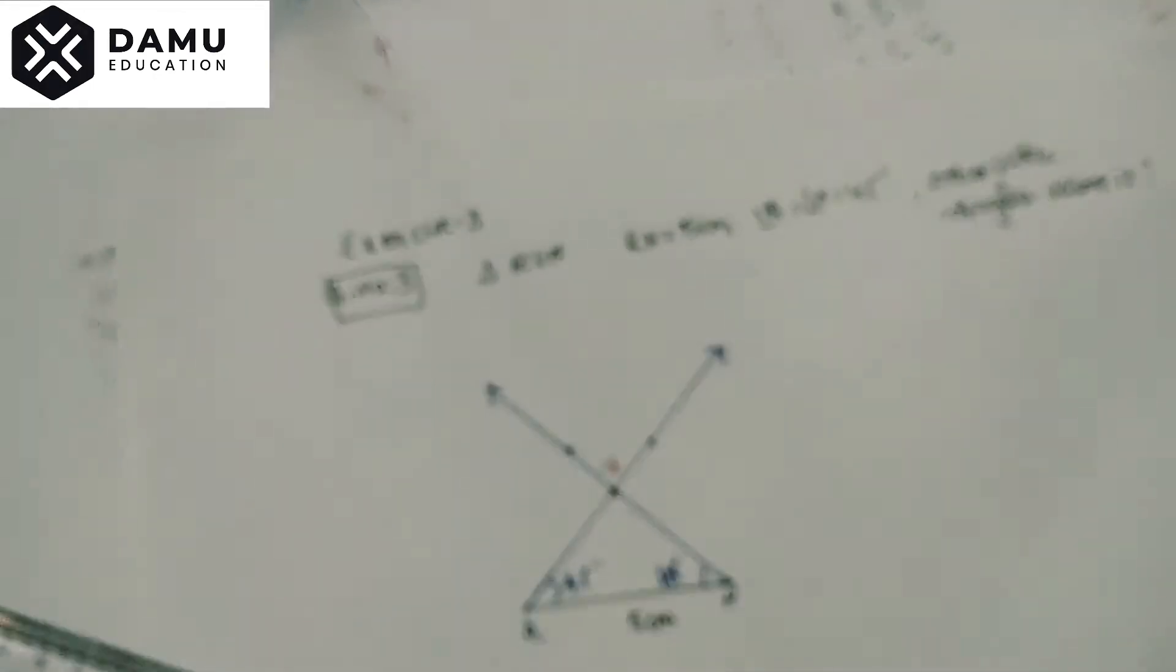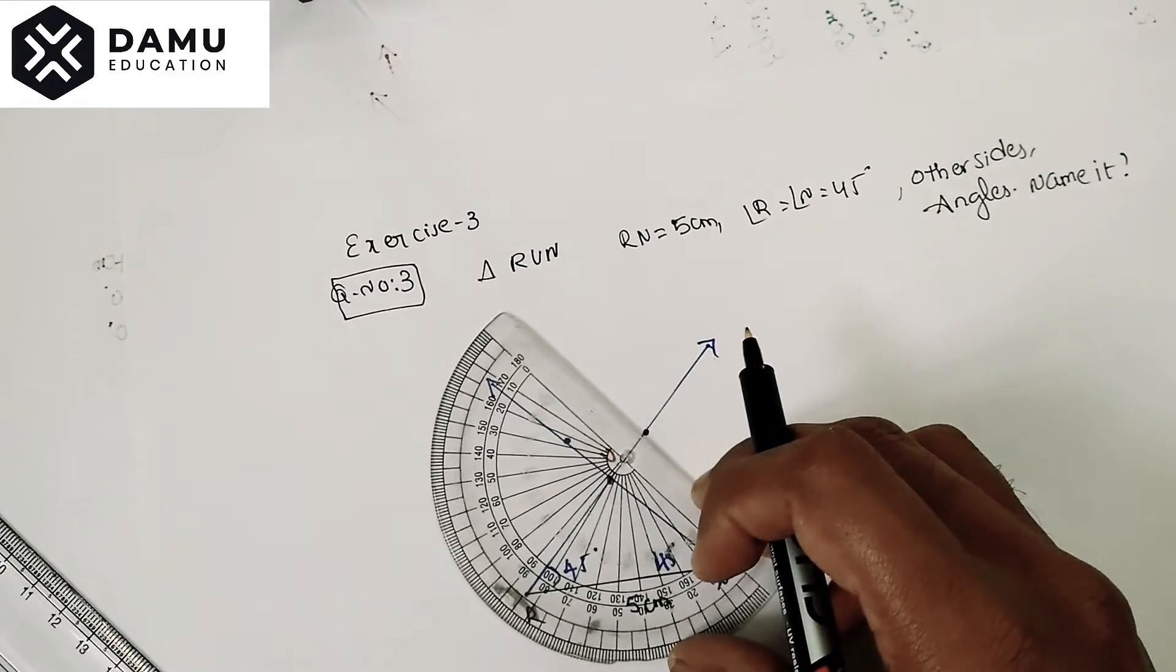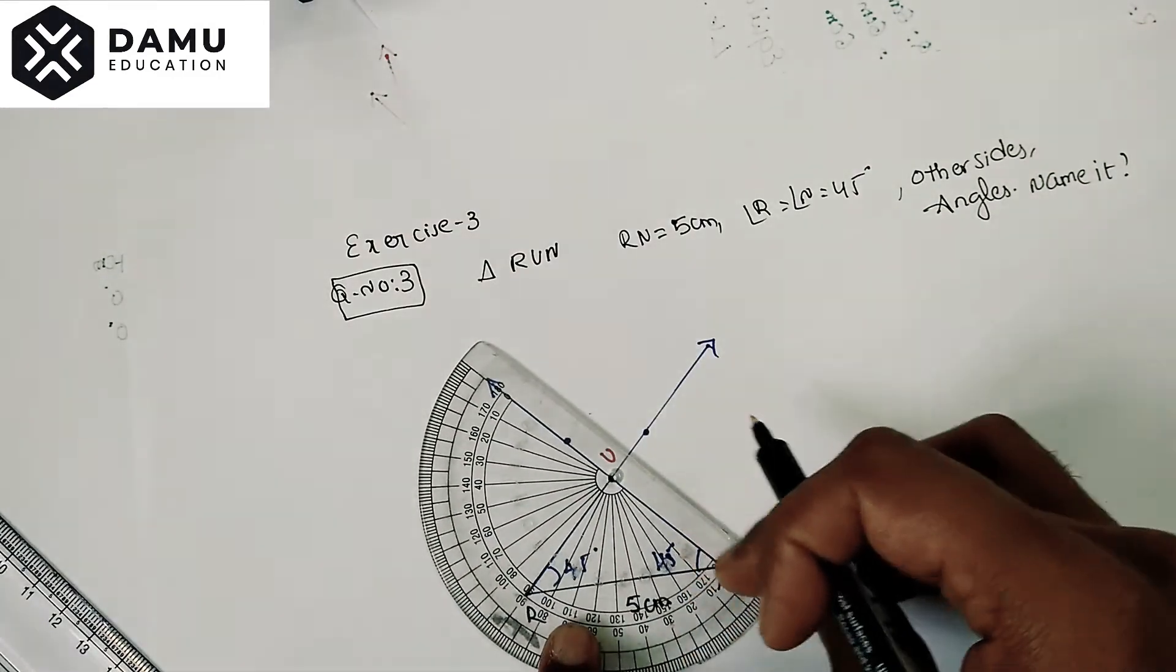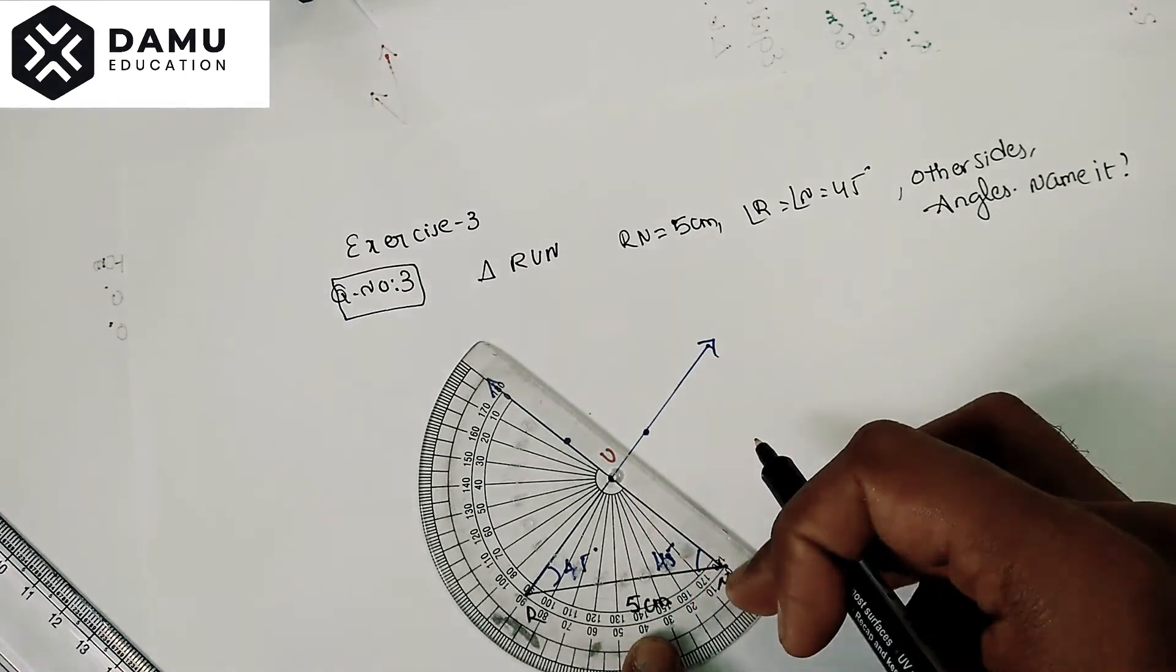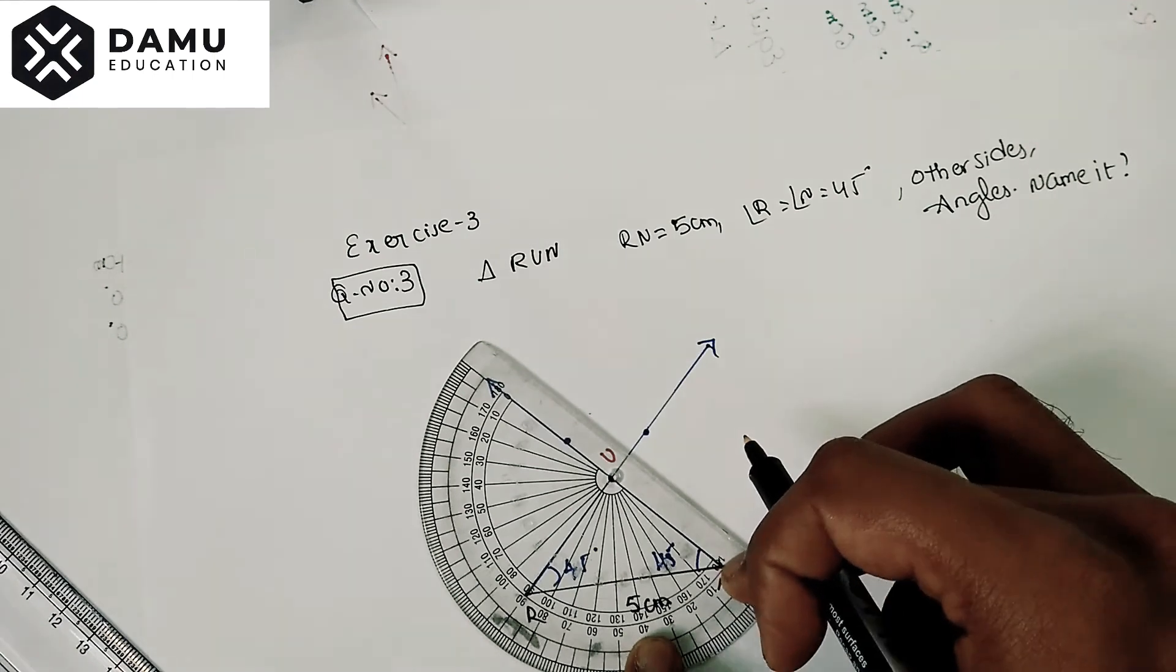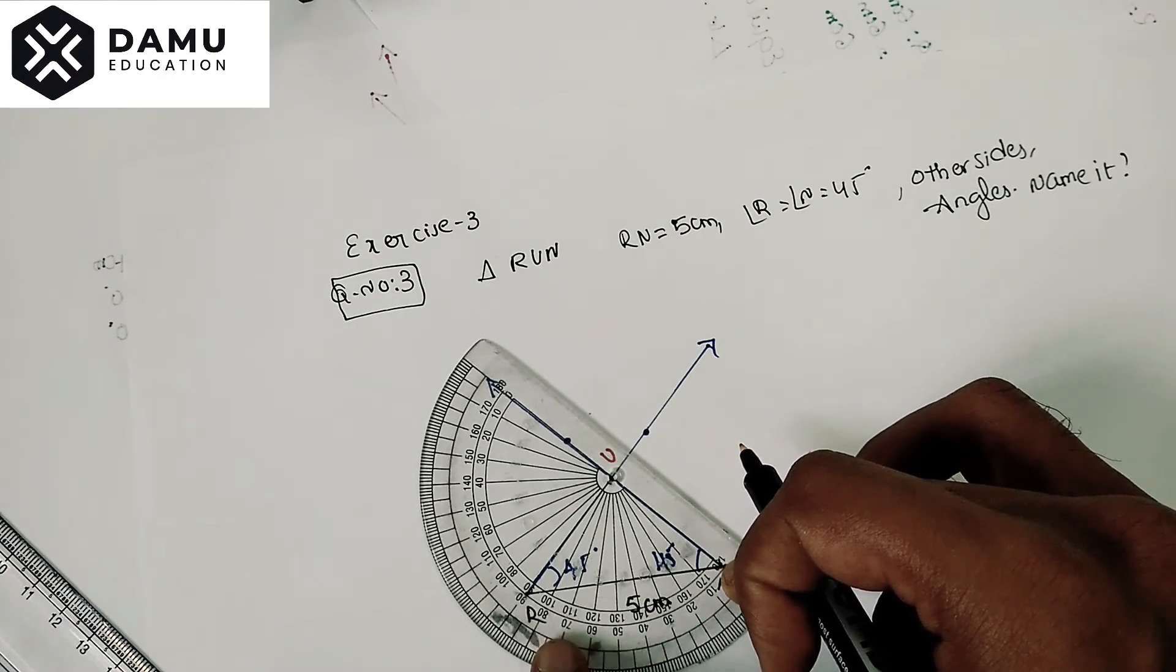If you measure the angle here, what angle will you get? I am placing the protractor like this and coinciding this side with ray UN. Here you need to start: 0, 10, 20, 30, 40, 50, 60, 70, 80, and 90.